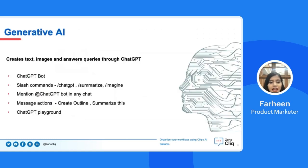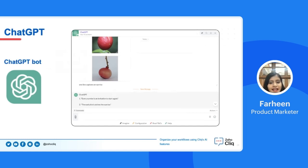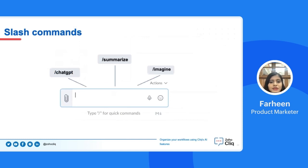Generative AI helps to create text, images, and answers your queries instantly. We have implemented Generative AI in Cliq through the integration of ChatGPT. The ChatGPT bot is your AI companion — it answers your questions, shares knowledge, helps with translation, spelling and grammar checks, and also summarizes your content. You can also translate your imagination into text and create images using the Imagine bot action. You can use slash commands to help create text and images in your chat. Use the ChatGPT command to ask questions about anything — enter a topic or question and an answer will be posted in the chat. The Summarize command combines the last 25 messages of the conversation and provides a summary.